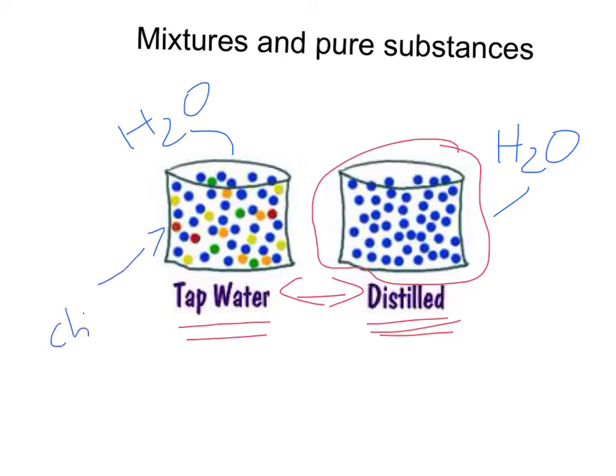so for example there might be a bit of chlorine in there, there might be a bit of salt in there, and a few other things which would be in tap water. So tap water is something we call a mixture, because there's not just water in there, there's all these different other things in there, that's a mixture.